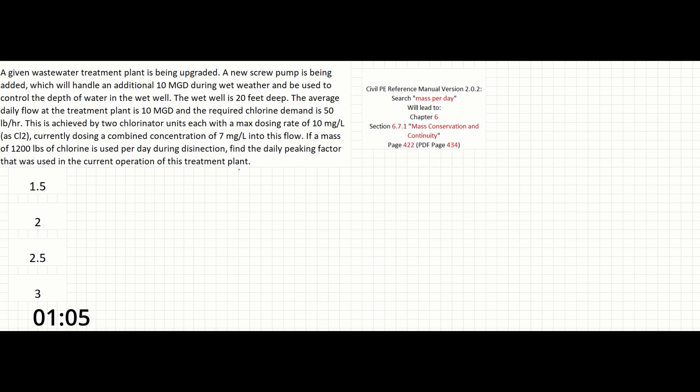So this problem has a very long problem statement. However, all it is asking us to find is the peaking factor that accompanies a certain concentration of chlorine. Some of you may already recognize how to solve this problem. For those of you who might not, on this question I tried to be helpful and include the phrase 'mass per day' in the problem statement.